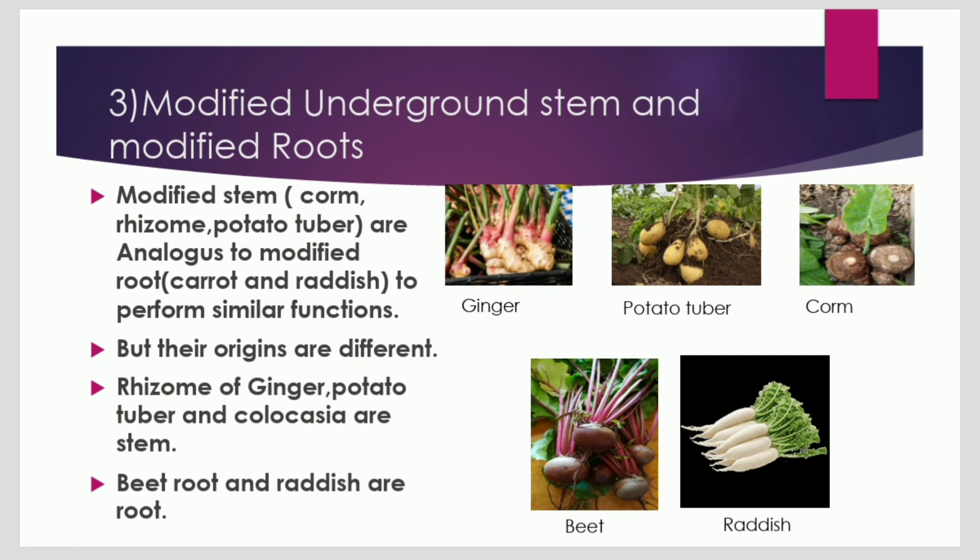Third, modified underground stem and modified root. Modified stems such as corm, rhizome, and potato tuber are analogous to modified roots like carrot and radish, as they perform similar functions. Both have different origins but the same function.